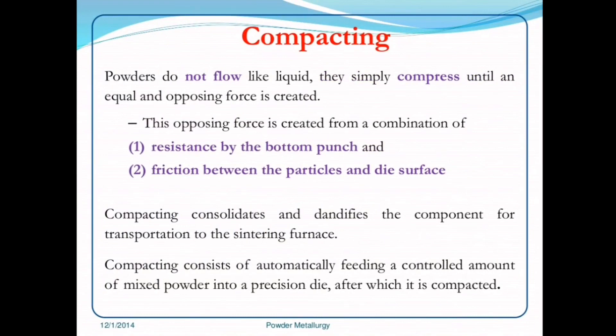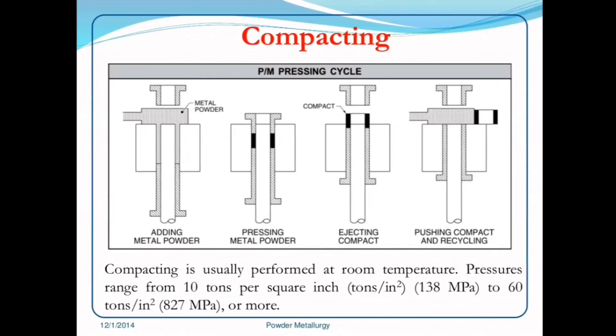Compacting powders do not flow like liquid; they simply compress until an equal and opposing force is created. This opposing force comes from a combination of the resistance by the bottom punch and friction between the particles and the die surface. Compacting consolidates and identifies the component for transportation to the sintering furnace. The process consists of automatically feeding a controlled amount of mixed powder into a precision die, after which it is compacted, ejected, and recycled.